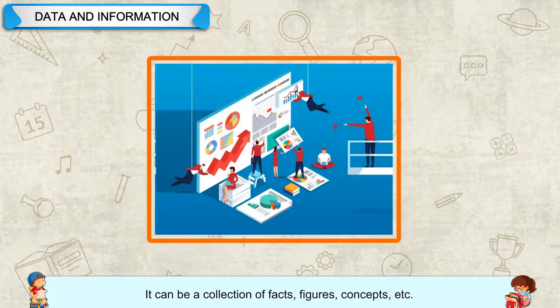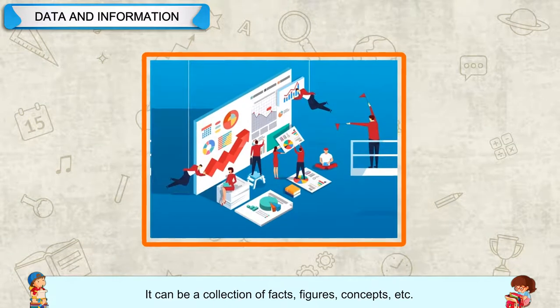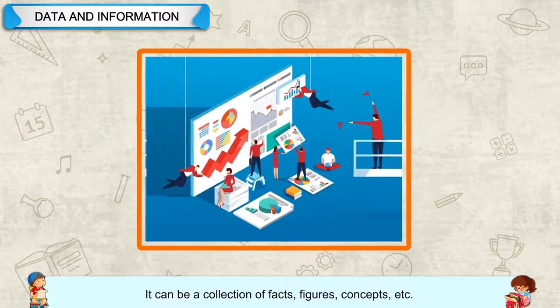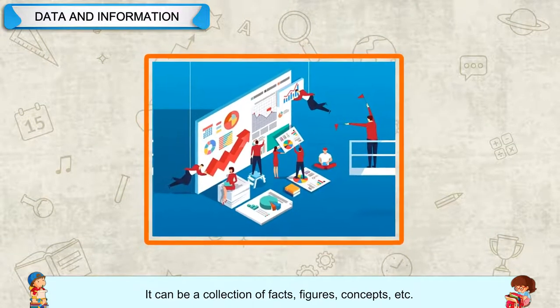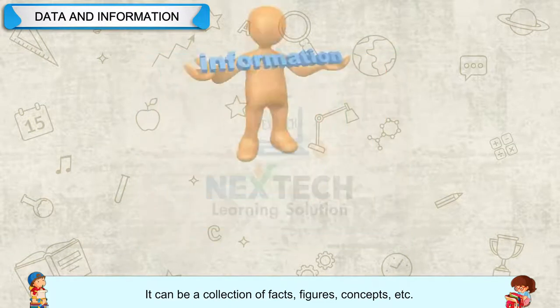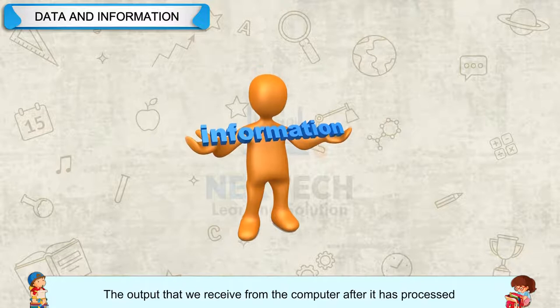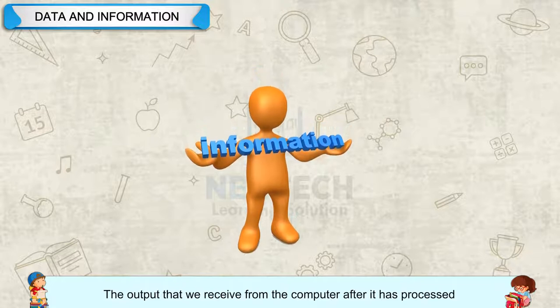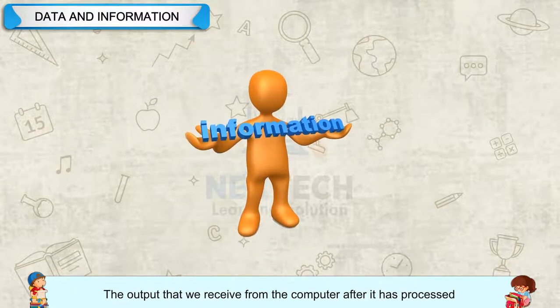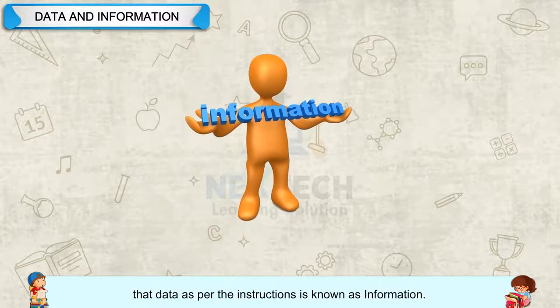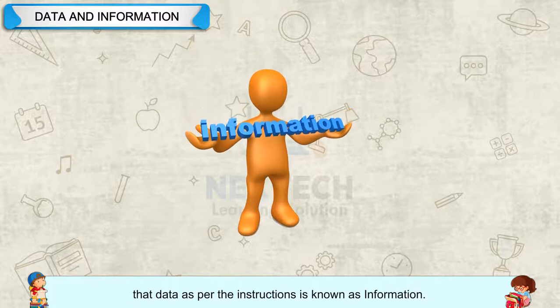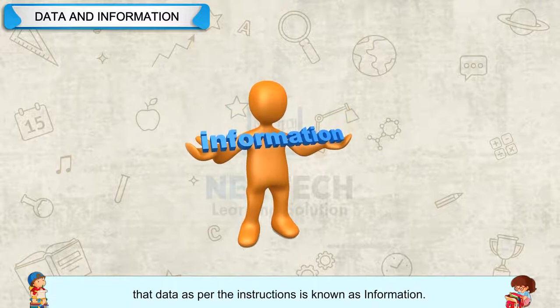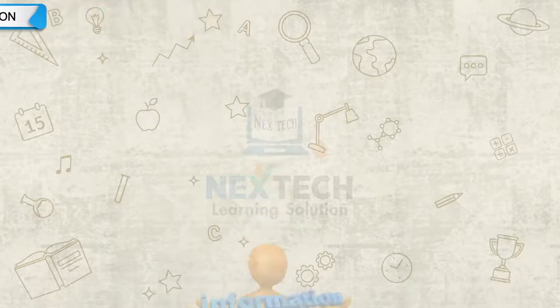Data can be a collection of facts, figures, concepts, etc. The output that we receive from the computer after it has processed that data as per the instructions is known as information.